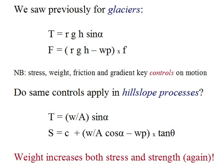We saw previously that glacier motion could be predicted from knowing the driving stress and the resisting friction, with stress governed by weight, rho gh, and surface gradient, alpha, and with friction governed partly by weight and basal water pressure. It turns out, if you look up equivalent relationships for mass movements, the same terms are involved. The driving stress tau is once again governed by the weight over the contact area and by the gradient — it's just the same for mass movements as for glaciers.